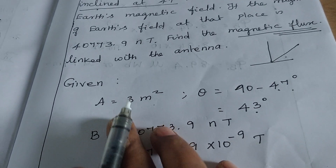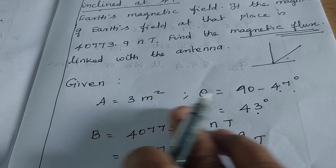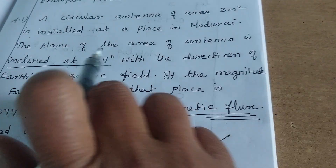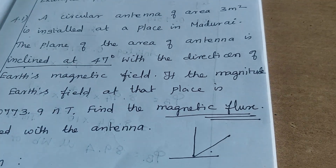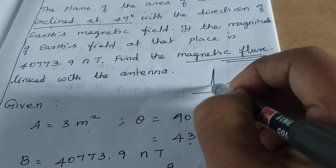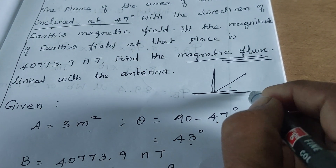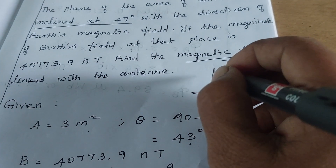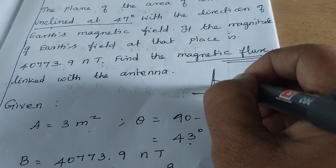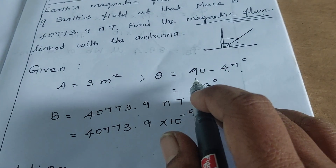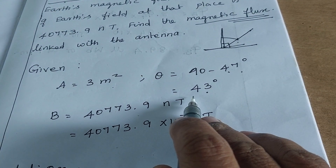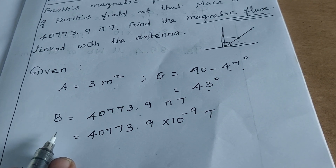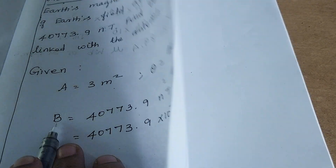Given: the area is 3 m². Theta is equal to 47 degrees inclined — so the plane of the antenna is inclined at 47 degrees. Since the normal to the plane is perpendicular to the plane, the angle with the field is 90 minus 47 degrees, which equals 43 degrees.